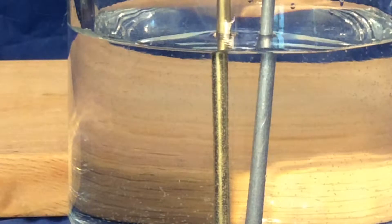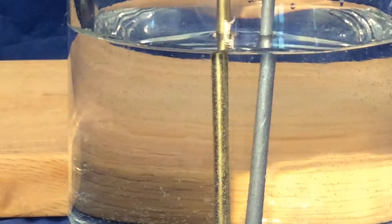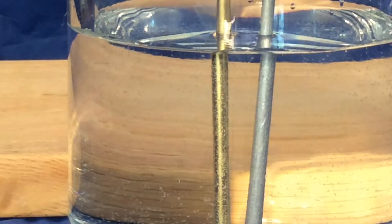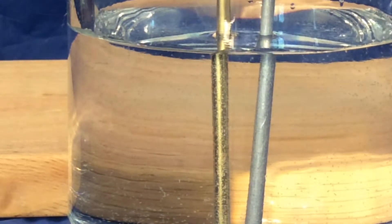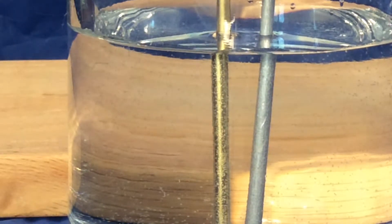So for us this is electrolysis. For the child it's making bubbles by passing electricity through water between two metal rods. The bubbles are on close inspection two different sizes. You have a little one and a big one. The little one is hydrogen. The big one is oxygen.